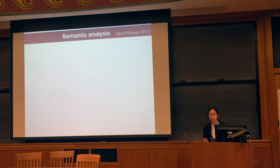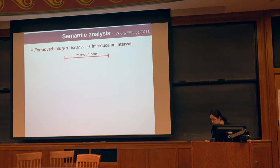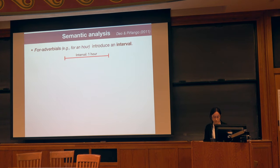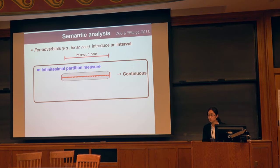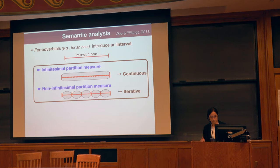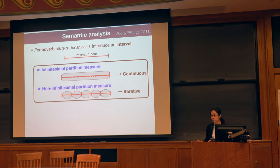Dale and Pinyango's analysis says that 'for' adverbials, like 'for an hour,' introduce an interval whose length is instantiated by the following noun phrase. This interval can be segmented or partitioned into a set of subintervals. When the partition measure is infinitesimal — essentially too small to be measurable — the sentence yields a continuous reading: one single event overlapping with all cells of the interval with no gaps. On the other hand, a non-infinitesimal partition measure involves distinct events overlapping with each cell of the interval, with gaps between subintervals, giving you iterative meaning.